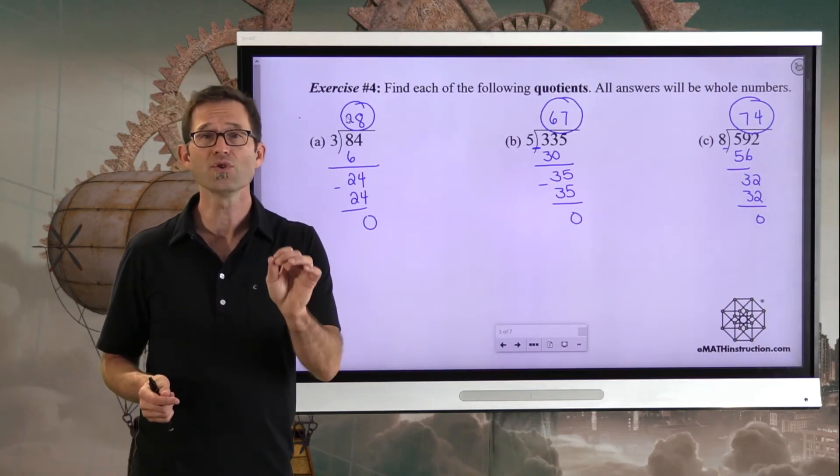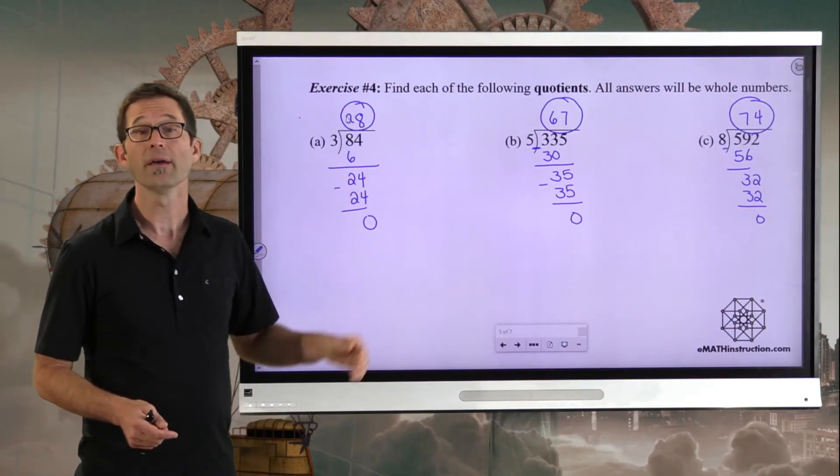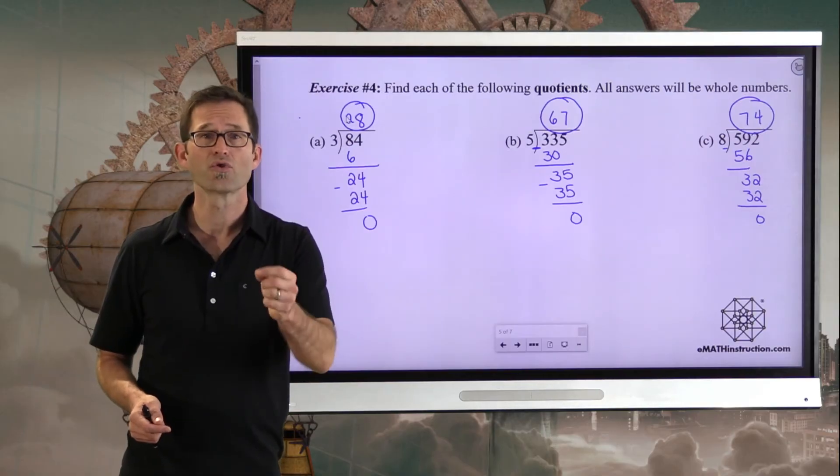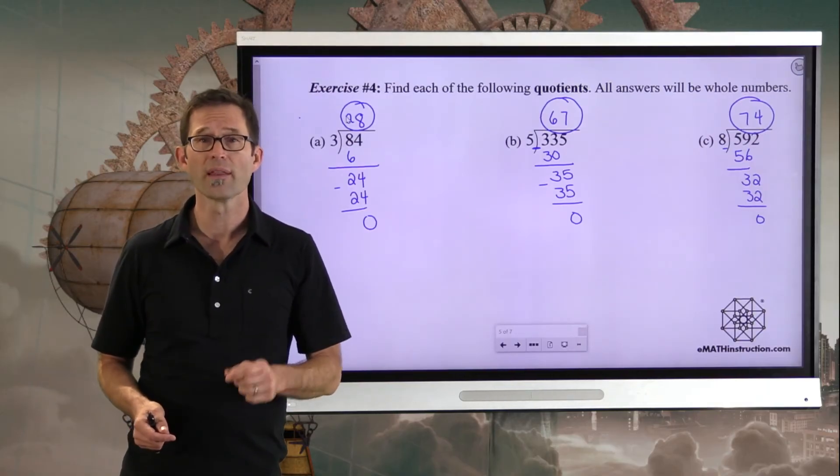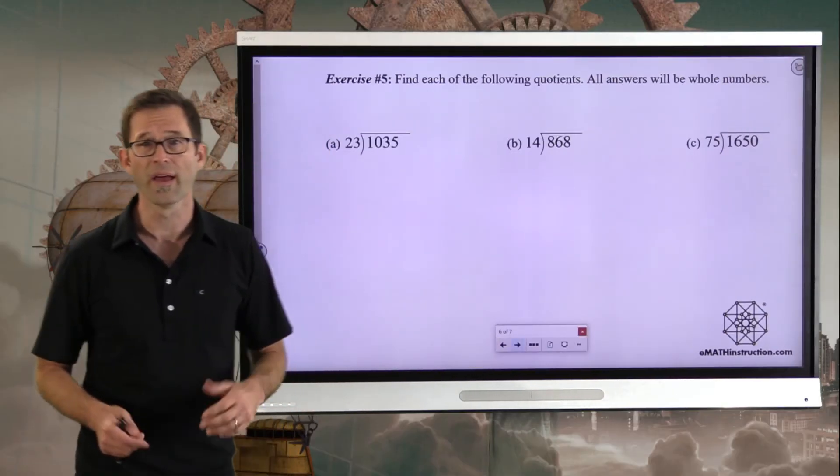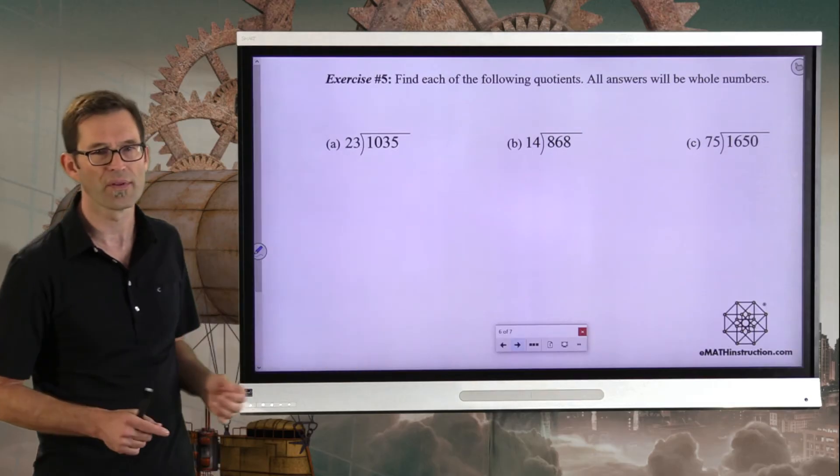Division gets much more challenging when the number that you're dividing by, known as the divisor, is a double digit, triple digit, et cetera, number. And let's talk about that in the next exercise. Exercise number five: Find each of the following quotients. All answers will be whole numbers. So let's talk about this. Much trickier now, because now I'm thinking about how many times 23 goes into 1035.